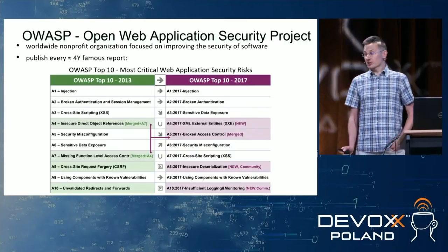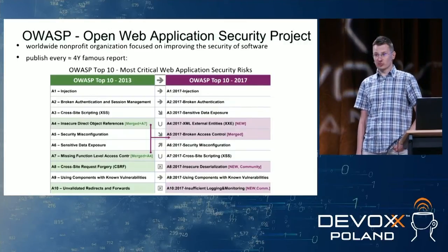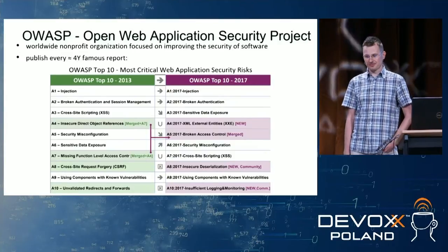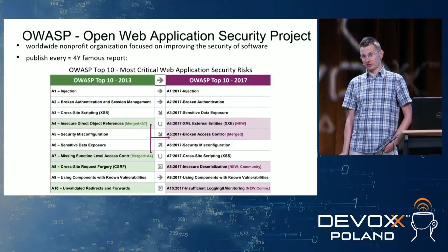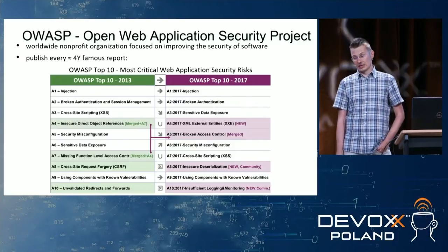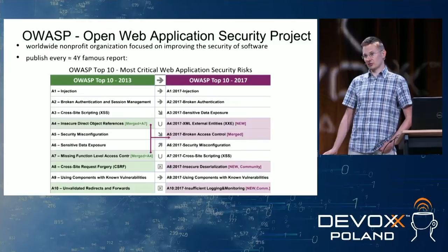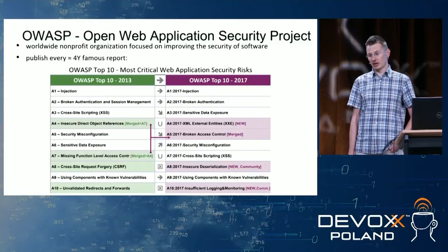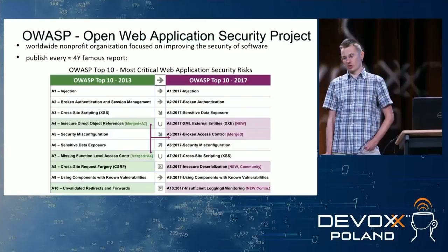This is a comparison between the current report from 2017 and the previous report from 2013. In the IT world, four years is a lot of time. Back in 2017 we were on Java 11; in 2013, Java 7. In the front-end world, now we are on Angular 12; back in 2017 it was Angular 4 and 5, and back in 2013, AngularJS 1.2.